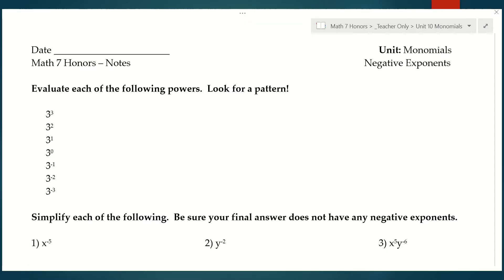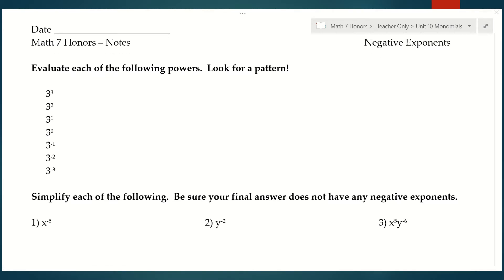I want you to look at this pattern of powers of 3. So if we look at the first one, 3 to the third power means 3 times 3 times 3, and that equals 27. Then 3 squared means 3 times 3, which is 9.